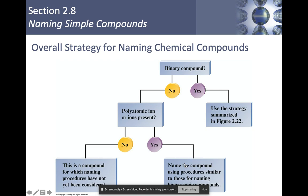Now, here's our overall strategy. We have to ask ourselves about polyatomic ions again. Is there a polyatomic ion? But again, it's pretty much exactly what we just did.